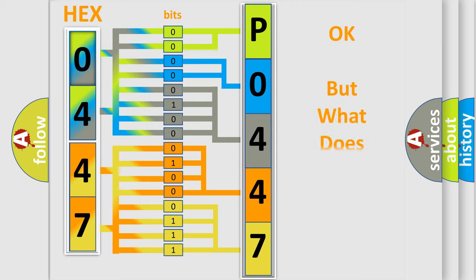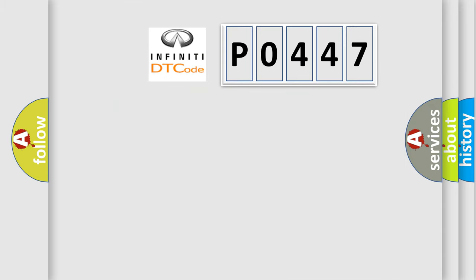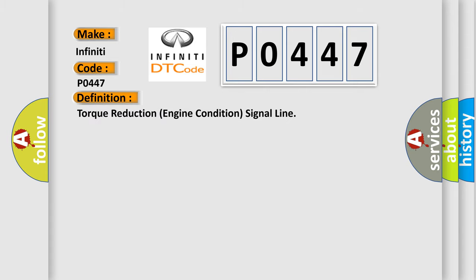We now know how the diagnostic tool translates received information into a more comprehensible format. The number itself does not make sense to us if we cannot assign meaning to what it actually expresses. So, what does Diagnostic Trouble Code P0447 interpret specifically for Infiniti car manufacturers? The basic definition is: Torque Reduction Engine Condition Signal Line. The short description of this DTC code includes: Malfunction of PCM and Malfunction of Related Wiring Harness.